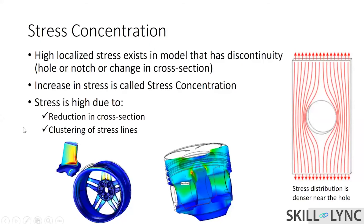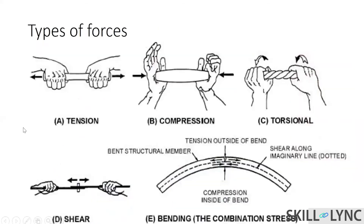Now let's look at different types of loading. Tension is where we pull the part away. Compression is compressing it. Torsion is twisting it. Shear is a force applied in the opposite direction. Bending is where we try to bend the part. All these types of forces are familiar, and you need to have a good understanding of them.